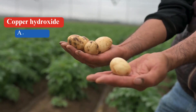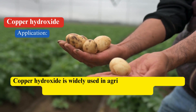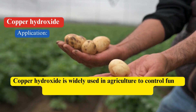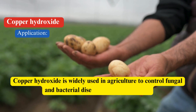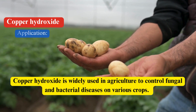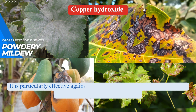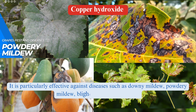Uses: Copper hydroxide is widely used in agriculture to control fungal and bacterial diseases on various crops. It is particularly effective against diseases such as downy mildew, powdery mildew, blight, and bacterial spot.